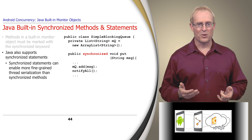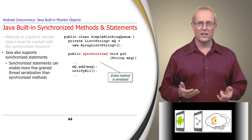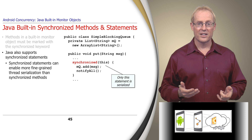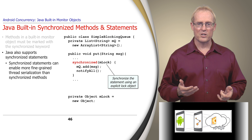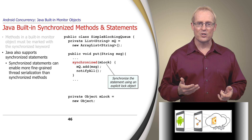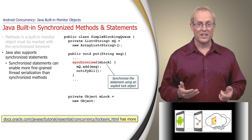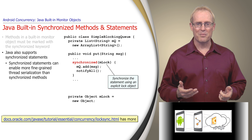For example, in one implementation of put, the entire synchronized method is serialized, whereas in another implementation, only the synchronized statement is serialized using the intrinsic lock. It's also possible for a synchronized statement to use an explicit lock object different from the object's intrinsic lock, providing further opportunities for fine-grained serialization. This link has more information on intrinsic locks, explicit locks, synchronized methods, and synchronized statements in Java.